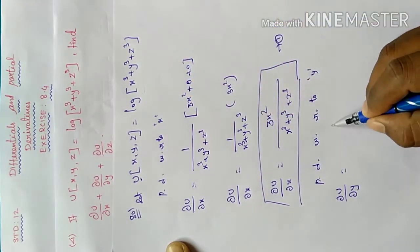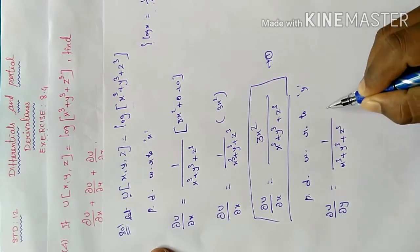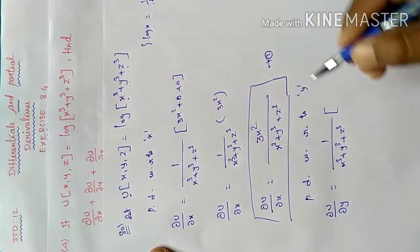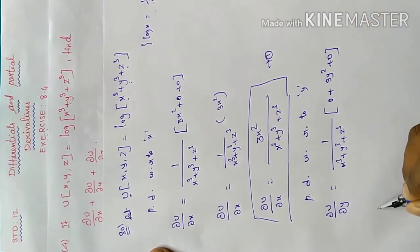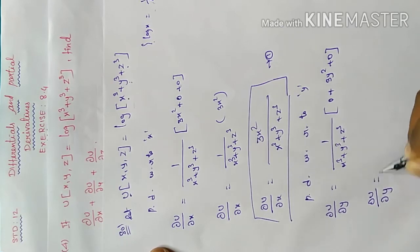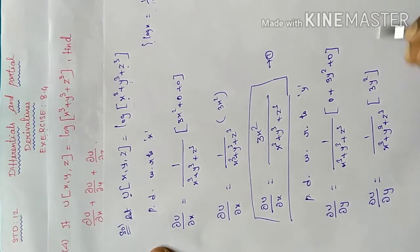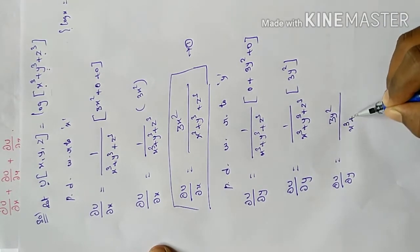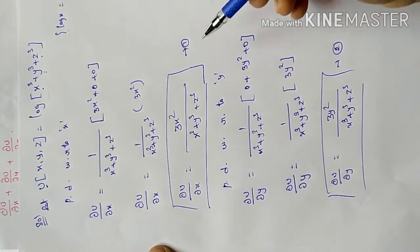By the log differentiation rule, this is equal to 1 by (x power 3 plus y power 3 plus z power 3) into the derivative of the inner term with respect to y. The x and z terms are constants, giving 0, and the y term gives 3y squared. Therefore, ∂u/∂y equals 3y squared divided by (x power 3 plus y power 3 plus z power 3). That is equation number 2.